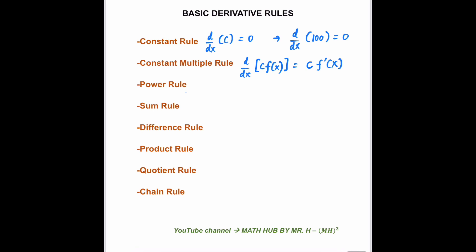The third rule is what we call the power rule. Say you have d/dx of x to the power of n. The derivative will be n times x to the power of n minus 1.